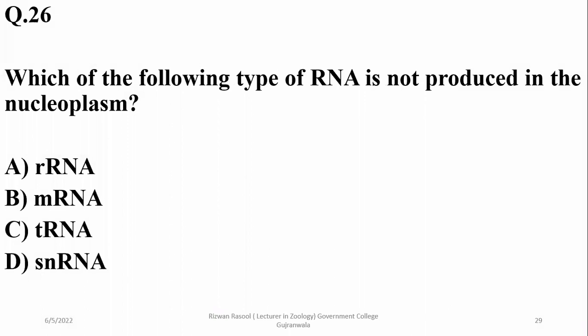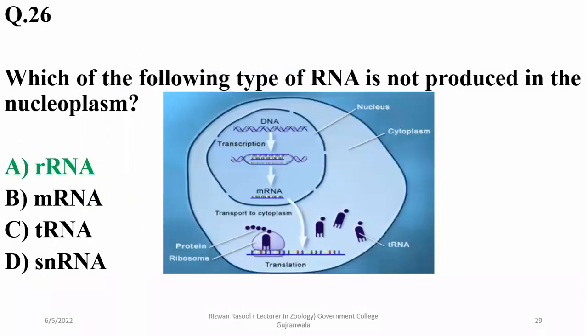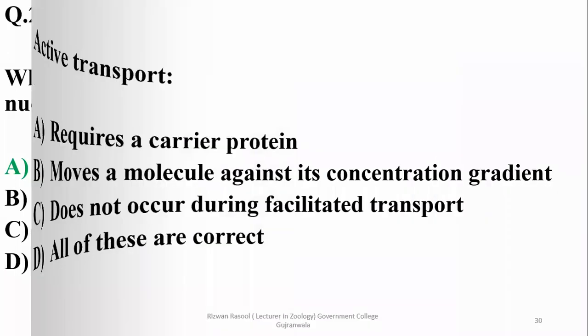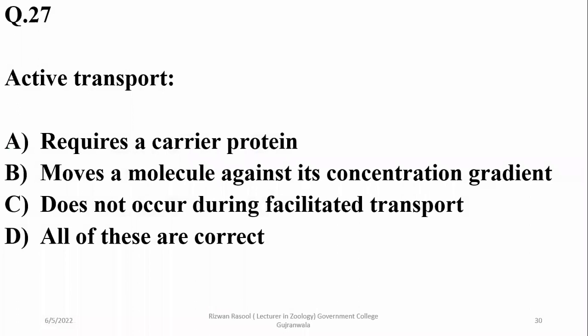Question 26: Which of the following types of RNA is not produced in the nucleoplasm? Other RNAs are made in the nucleoplasm, but ribosomal RNA (rRNA) is formed within the nucleolus — its transcription occurs in the nucleolus. Question 27: Active transport requires a carrier protein and moves a molecule across the gradient. It does not occur during facilitated transport. Right option is D.